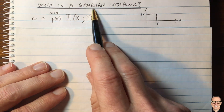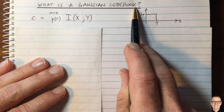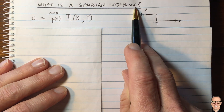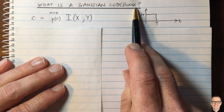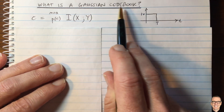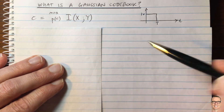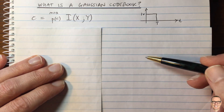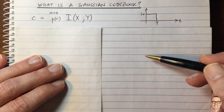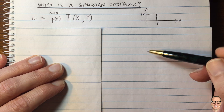What is a Gaussian codebook? Codebooks are used to send information over communication channels. The Gaussian codebook is the one that achieves the highest possible rate for the additive white Gaussian noise channel — a particular type of channel, and a very common channel.